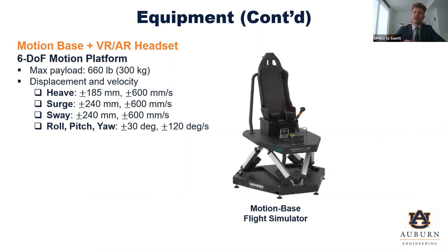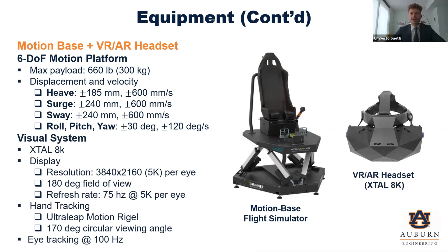To give a brief rundown of the main equipment highlights: the motion platform is about 600 pounds, equivalent to 300 kilograms. The displacement in angular motion is about 30 degrees, but it has a pretty high bandwidth, arriving at about 120 degrees per second, which is high compared to other motion platforms at the same cost. The visual system is the VRgineers XTAL 8K, which is for now the most advanced headset available on the market. The resolution is about 5K per eye, with about 180 degrees of field of view and a pretty high refresh rate. It also has hand tracking using Ultra Leap technology and eye tracking for human factors study.